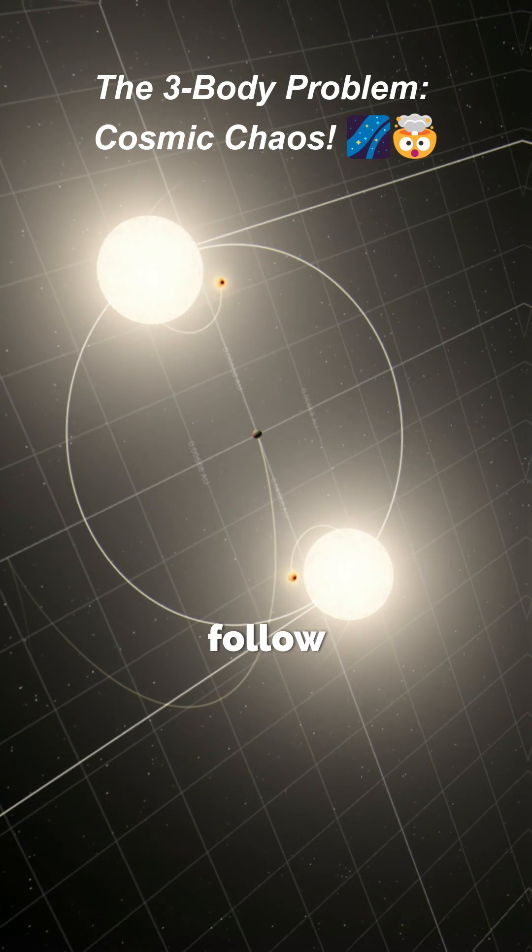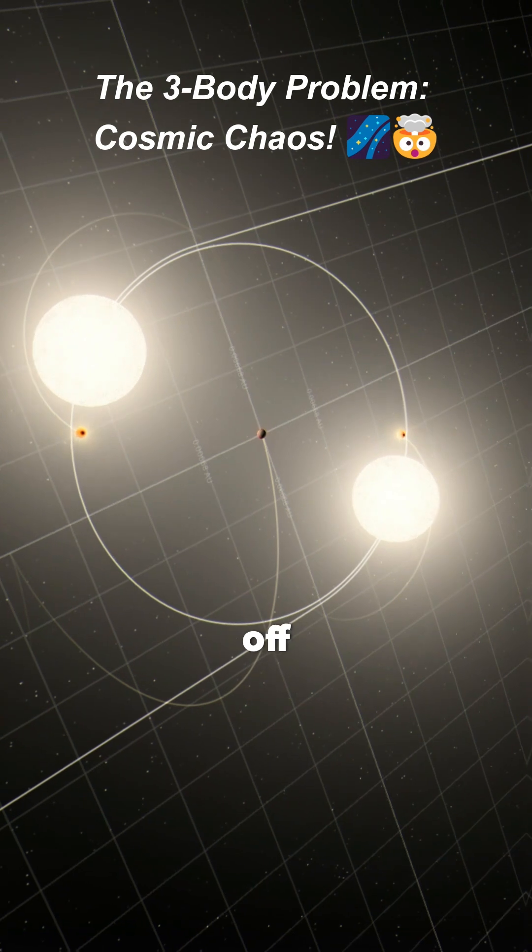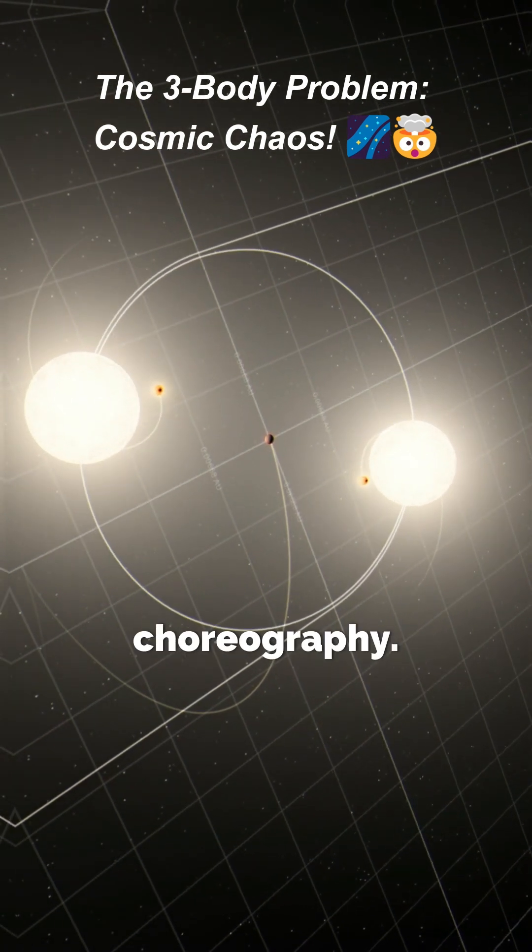Unlike two objects, which follow predictable orbits, when you add a third, the system turns into a cosmic dance-off where no one can agree on the choreography.